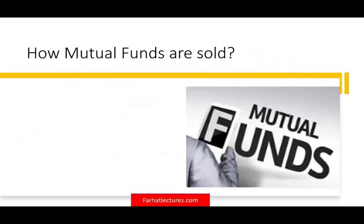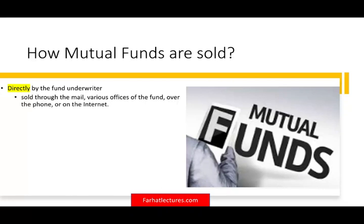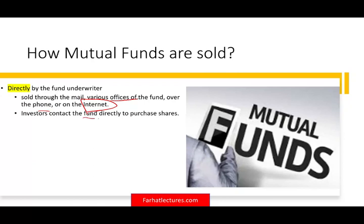Before we talk about the expenses associated with buying mutual funds, we want to know how mutual funds are sold. Mutual funds are sold directly from the fund underwriter — the person that creates the fund. They can sell it to you directly through mail, their offices, over the phone, or over the internet. Most of the time, you buy funds over the internet, and if you have a broker, you can buy through the broker.